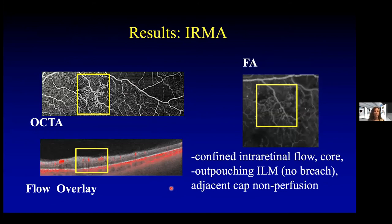Here's a case where on the OCT-A there's a foci of abnormal blood vessels. On the flow overlay, we confirmed that this flow is confined to an intraretinal location — while there might be a little bit of outpouching of the ILM, there is no extension or breach through the ILM. This is consistent with IRMA, and fluorescein angiography on the right, which was our ground truth, confirmed this was IRMA.